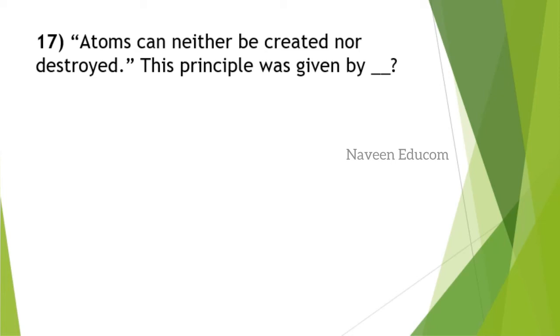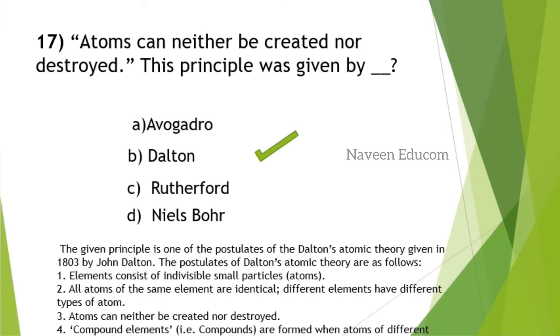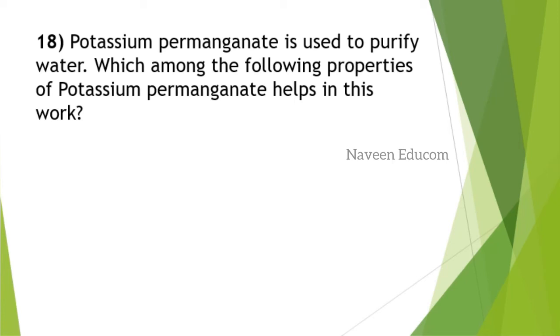Atoms can neither be created nor destroyed. This principle was given by whom? From chapter 2 of atomic structure you study in 11th standard NCERT, even in 9th standard. The answer is option B, Dalton. The given principle is one of the postulates of Dalton's atomic theory given in 1803 by John Dalton. Please note this year. If they want to make the examination more tight, they will add these dates. The postulates of Dalton's theory are also given. You can note it down and read it.